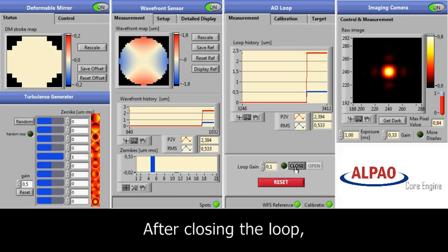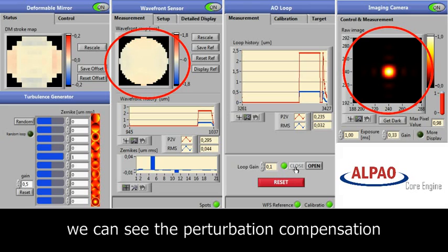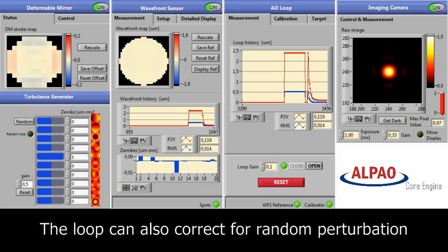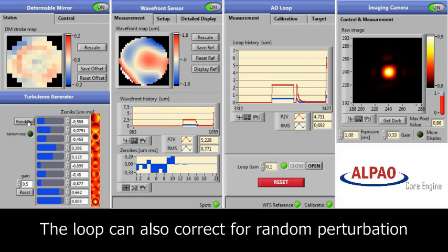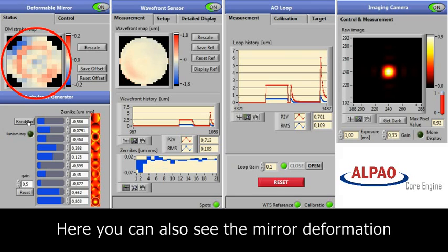As we can see on the displays, the wavefront is flattened, the image resolution is improved as the mirror shape changes to compensate for the aberration. We can also introduce a random perturbation, and on our mirror status monitor we can see the set of mirror commands used for compensation.